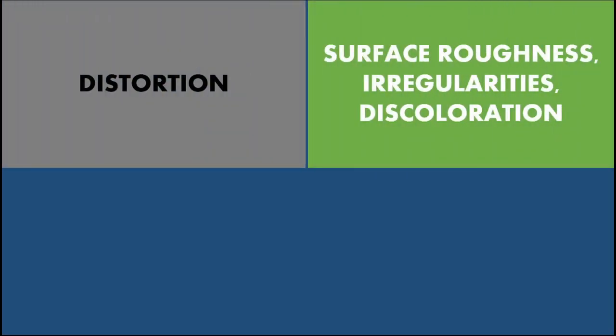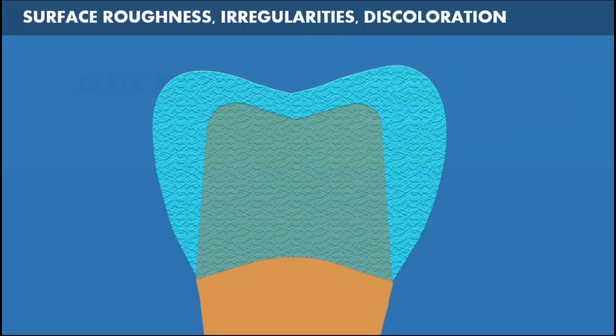Now let's understand about surface roughness, irregularities and discoloration of the casting. The surface of a dental casting should be an accurate reproduction of the surface of the wax pattern from which it is made. Surface roughness is relatively finely spaced surface imperfections whose height, width and direction establish the predominant surface pattern. It is like a uniform roughened surface of the casting.